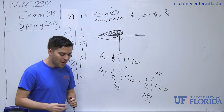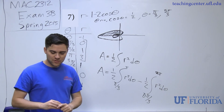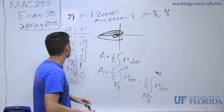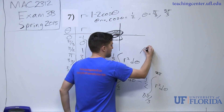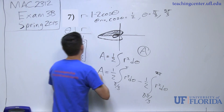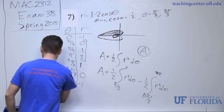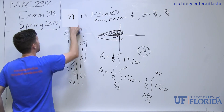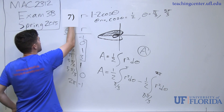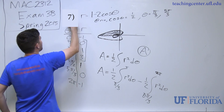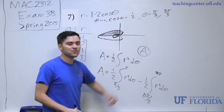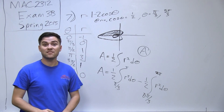By looking at the answer choices, the answer to number seven on exam 3B is A.